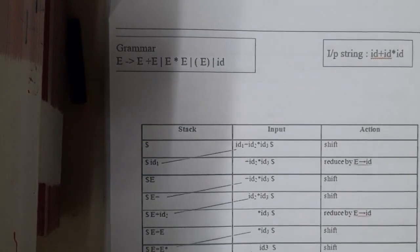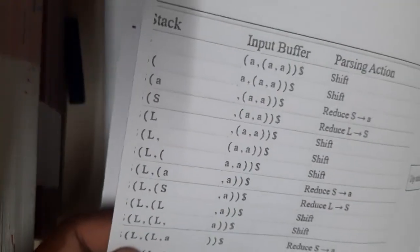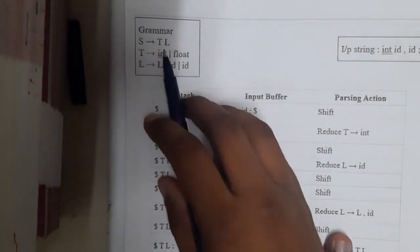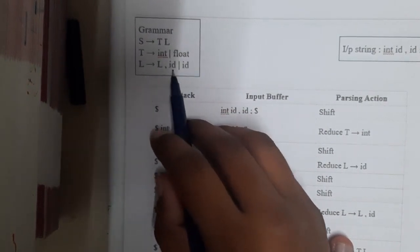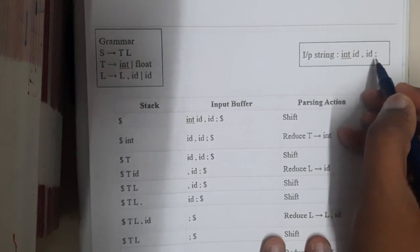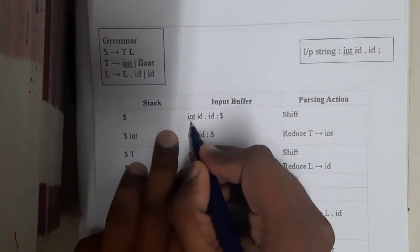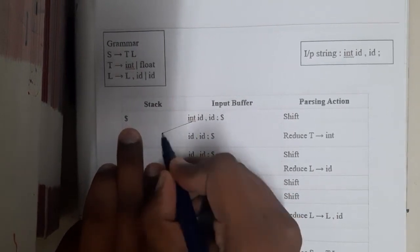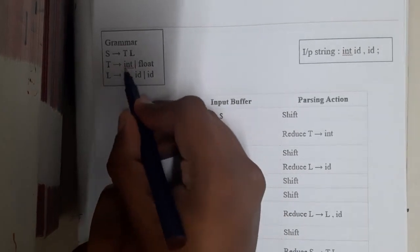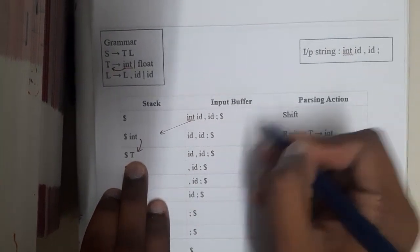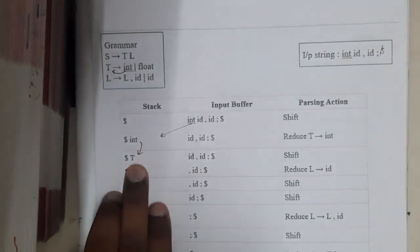There are around six to seven more examples in the PDF. Let us take another one with a diagram. The grammar is: S → TL, T → int | float, L → L,id | id. The input string is int id comma id semicolon. We push int into the stack; int matches T, so we convert int to T. Then we push id.